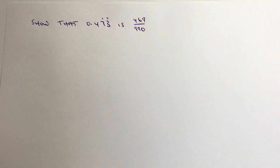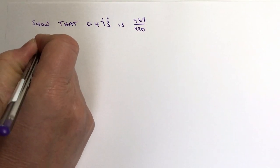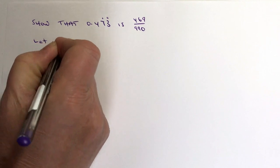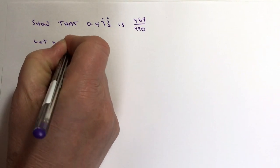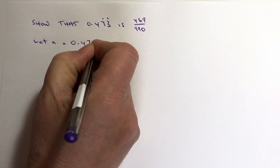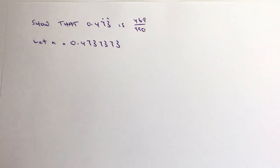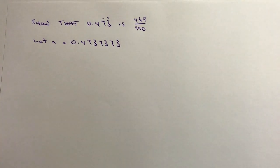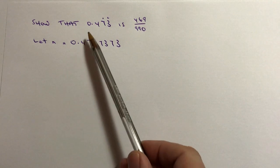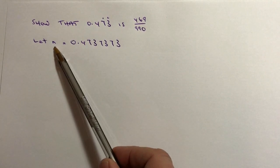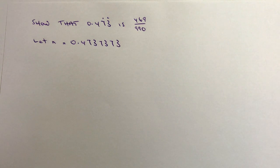The first thing that we do is we say let n equal 0.4737373. Algebraically, we're just going to change that value into equalling a letter — it could equally well be x if you preferred, it doesn't really matter.